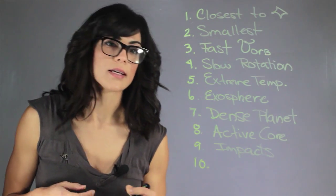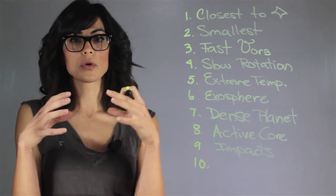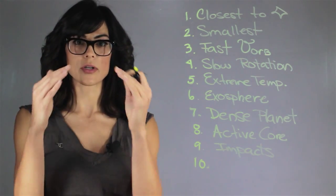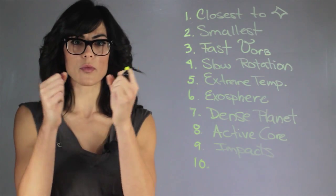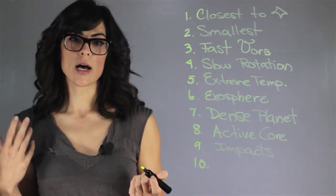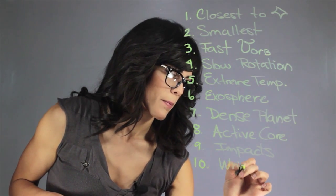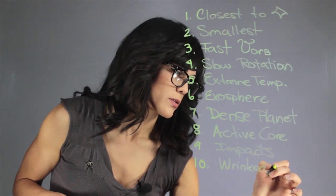And then the next thing is that the surface is wrinkled and it's because the planet has cooled and contracted so the outer surface has kind of formed wrinkles and ridges so it actually has deformed the landform. So wrinkled surface.